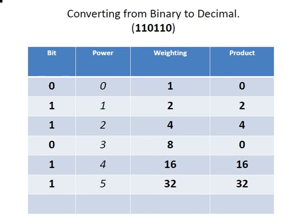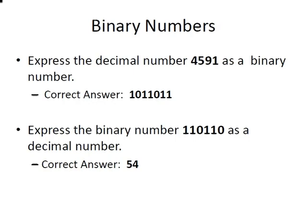The answer is the sum of all these products. Adding them up: 0+2+4+0+16+32 = 54. So the binary number 110110 expressed as a decimal number is 54.